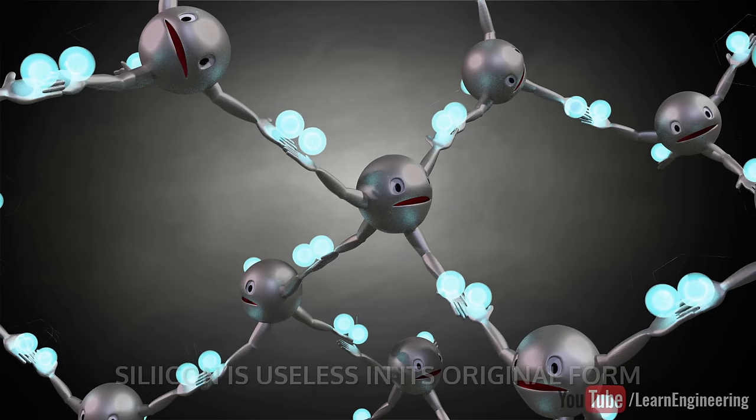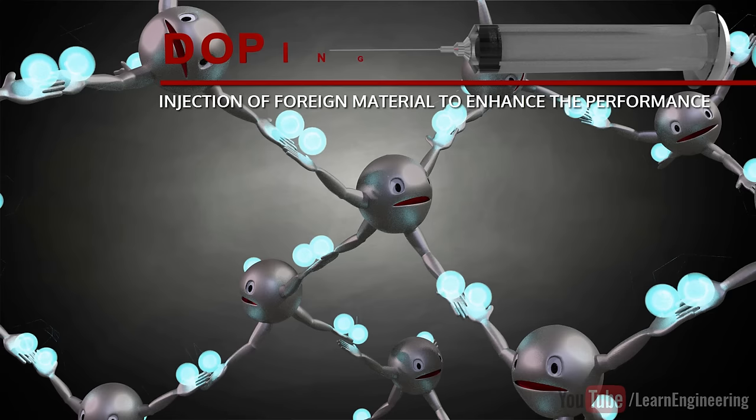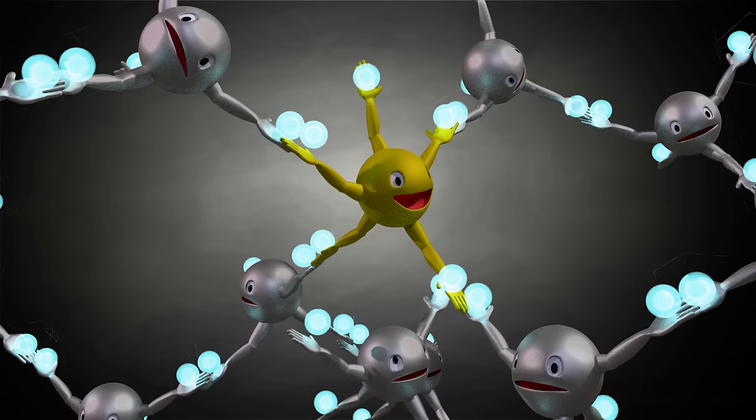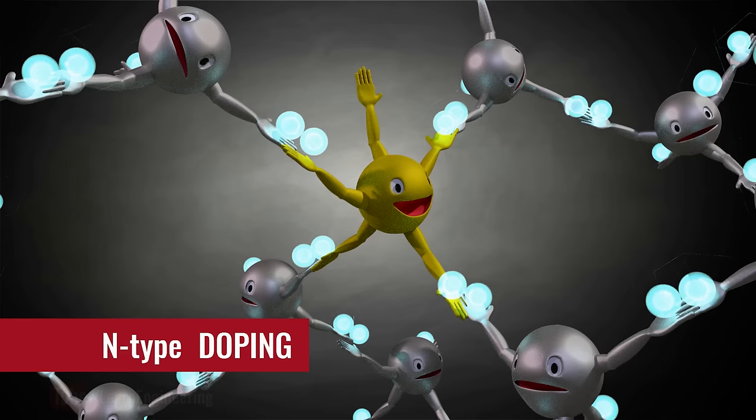A technique called doping is used to improve the conductivity of semiconductors. For example, say you inject phosphorus with five valence electrons. Here, one electron will be free to move in the system. This is known as n-type doping.